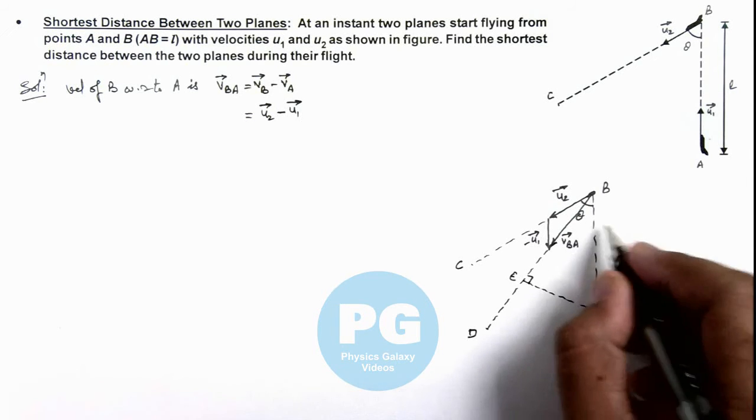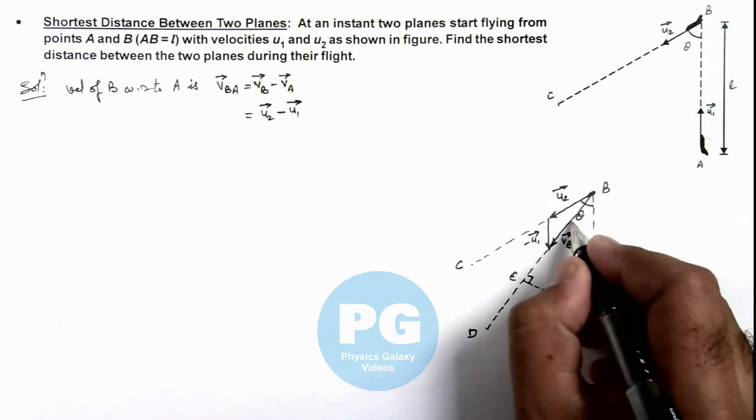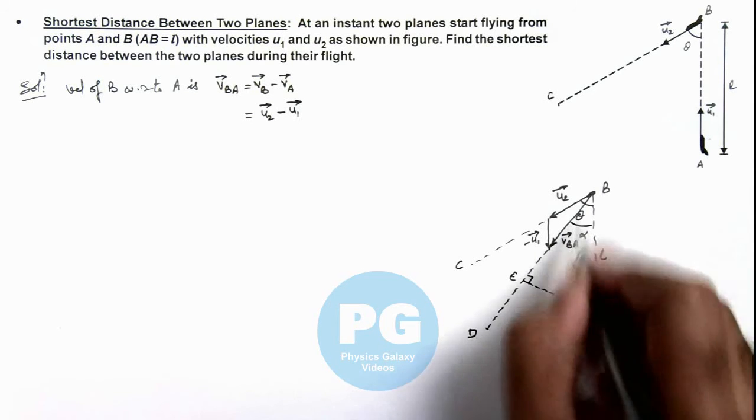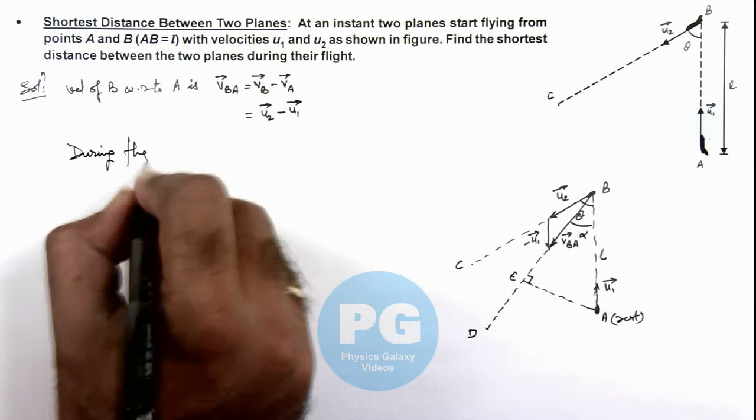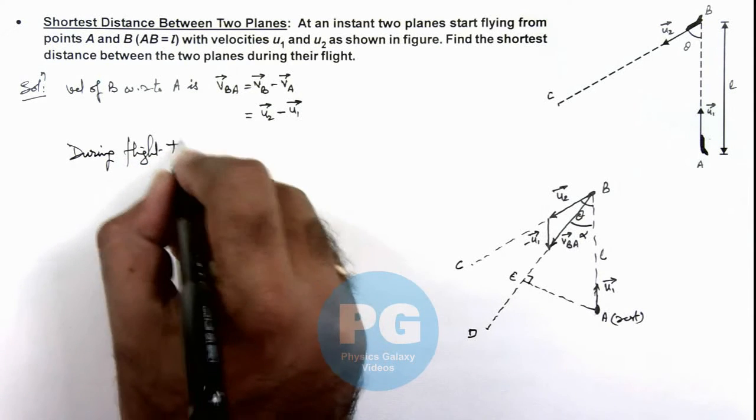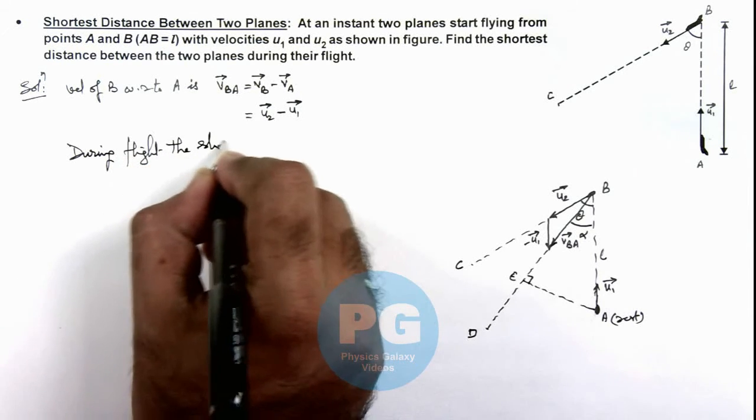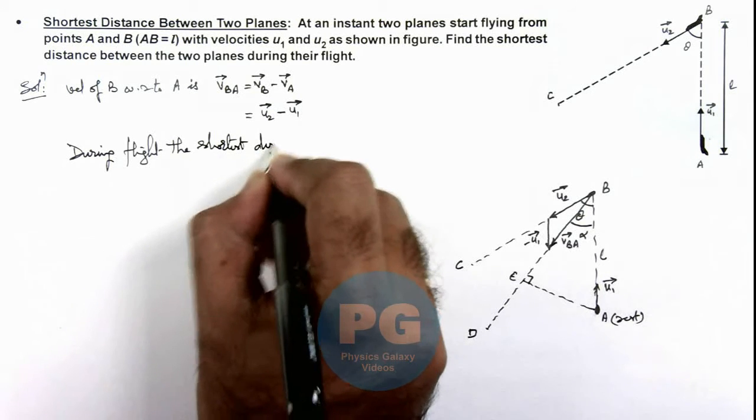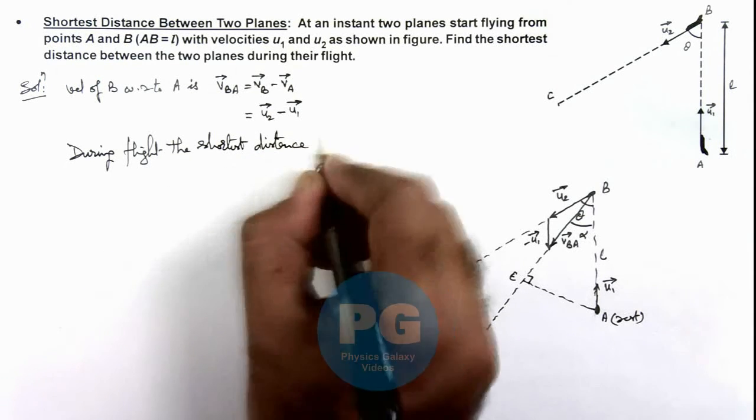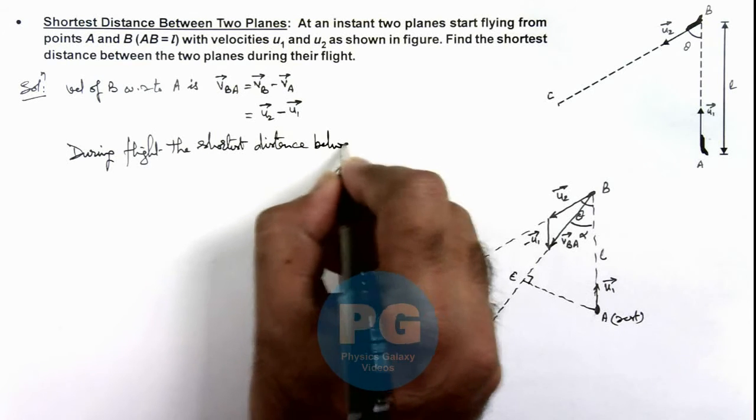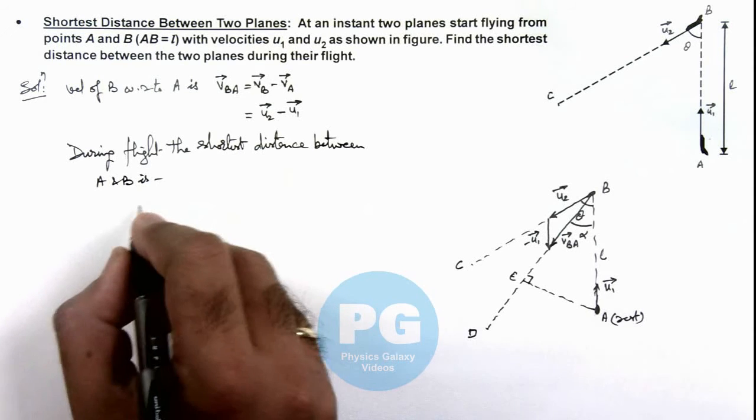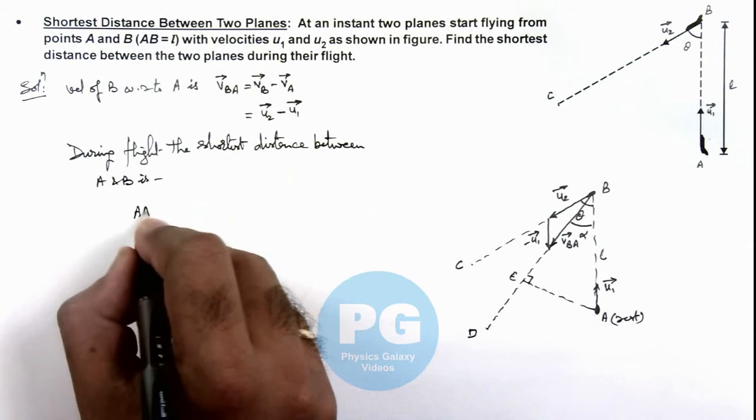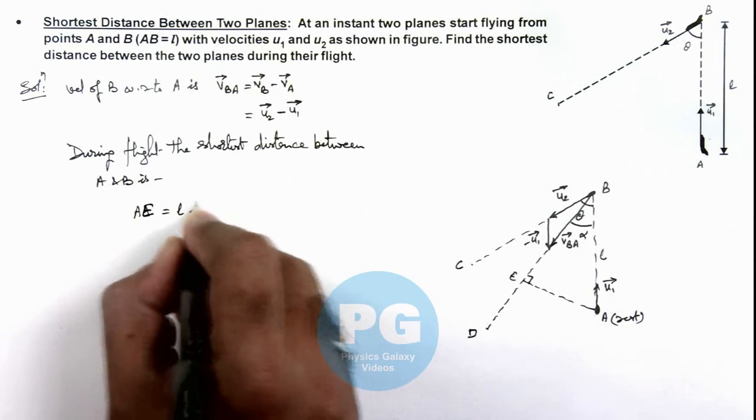Here, if this length is L and if we consider this angle to be alpha, here we can write during flight the shortest distance between A and B is AE, and the value of AE is equal to L sin alpha.